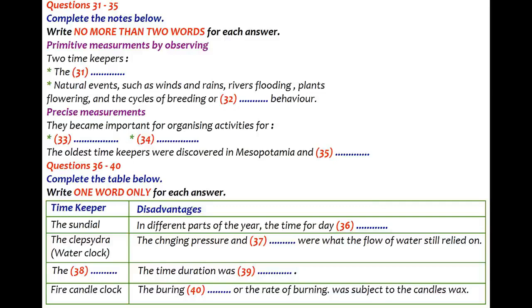The last timekeeper to be introduced is the fire candle clock. Candle clocks took advantage of a simple concept: the slow and consistent nature of a burning wax candle. By utilising this process, our ancestors were able to keep steady track of the time. The clocks were created by engraving the length of the candle with evenly spaced markings. Each marking represented a single unit of time and, as the wax burned down, each hour would disappear. However, the drafts and the variable quality of the wax mainly influenced the time of burning. Like oil lamps, candles were used to mark the passage of time from one event to another rather than tell the time of day.